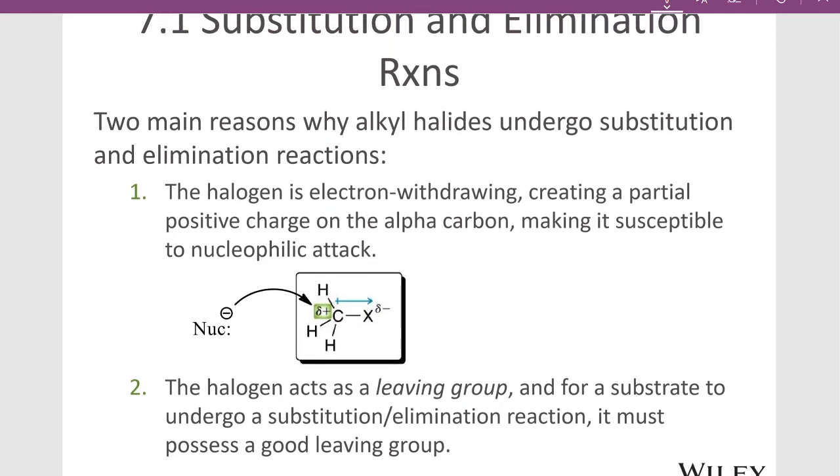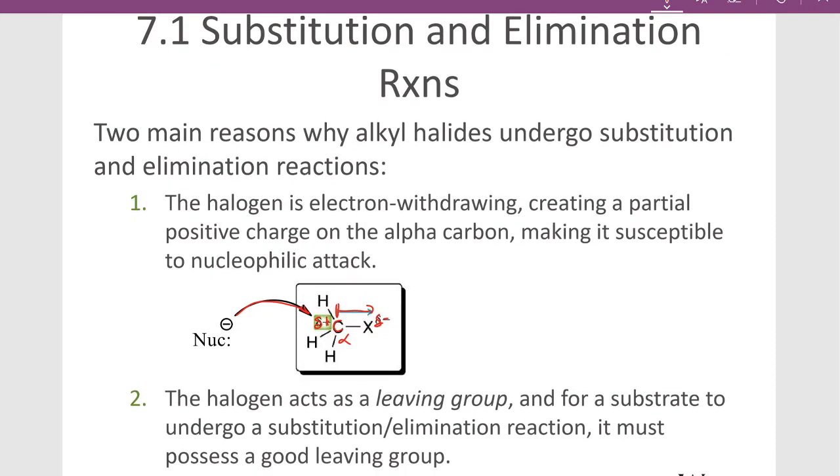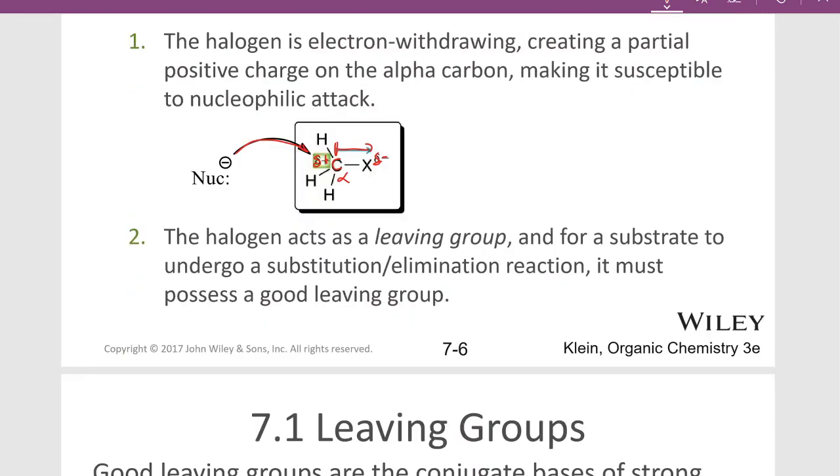Why do these reactions actually happen? It's because the halogen is electron withdrawing and it can withdraw electron density from the carbon leaving a partial positive on the carbon and a partial negative on the halogen. That carbon is called the alpha carbon because it's the carbon bearing the halogen, making it susceptible to nucleophilic attack. A nucleophile is negatively charged, it's going to be seeking out something that's positively charged and it will attack that partial positive on the carbon. Halogens are also good leaving groups, and if something is going to undergo a substitution or elimination reaction it has to have a good leaving group and it's a good leaving group because it's stable.